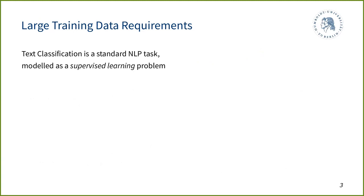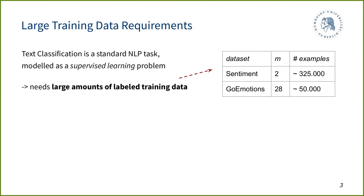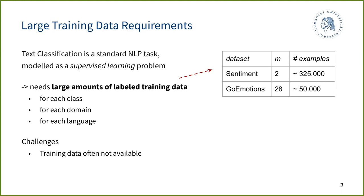Text classification is typically modeled as a supervised learning problem, and for this you need very large amounts of labeled training data. The sentiment classifier I showed has two classes and was trained with over 300,000 labeled examples. The emotion dataset has 28 different emotions but only about 50,000 labeled examples, and so that model works much less well. Essentially, the more data you have and the simpler the problem, the better your classifier. This problem gets harder with more classes, more domains, and more human languages.